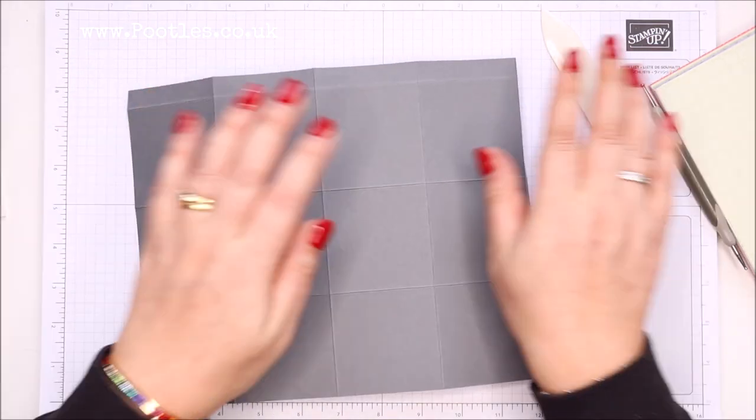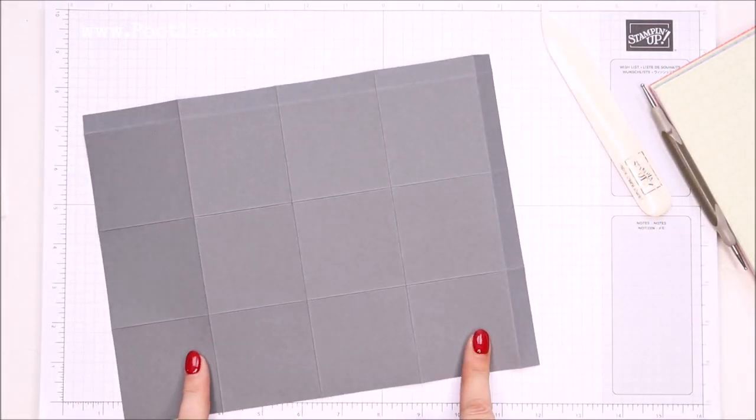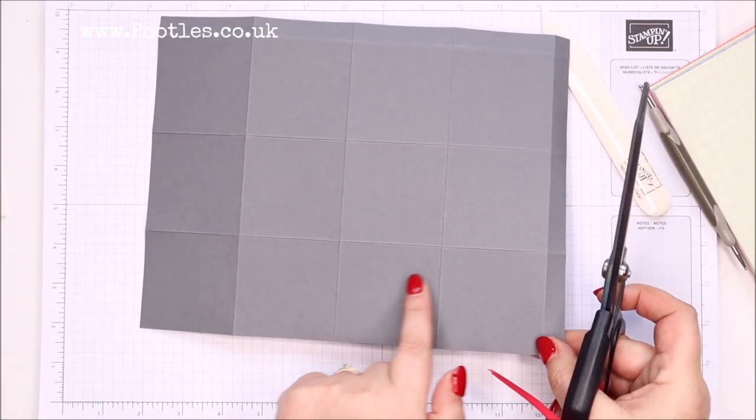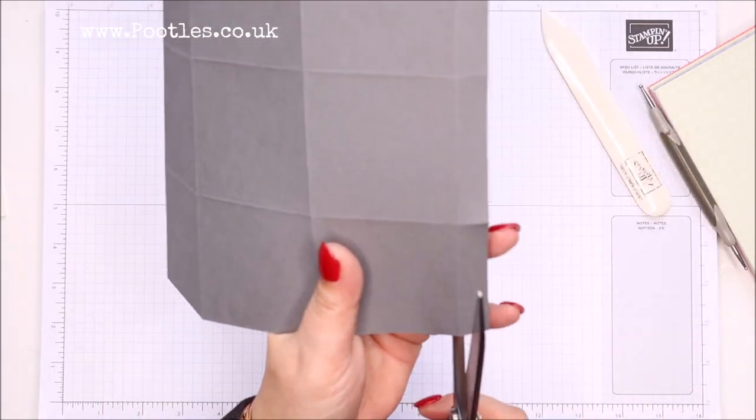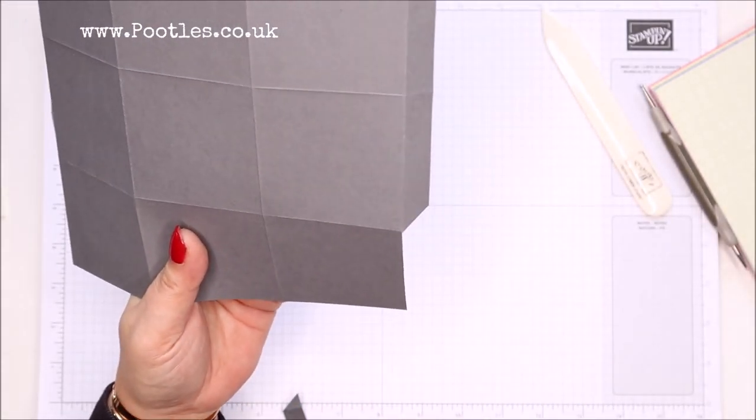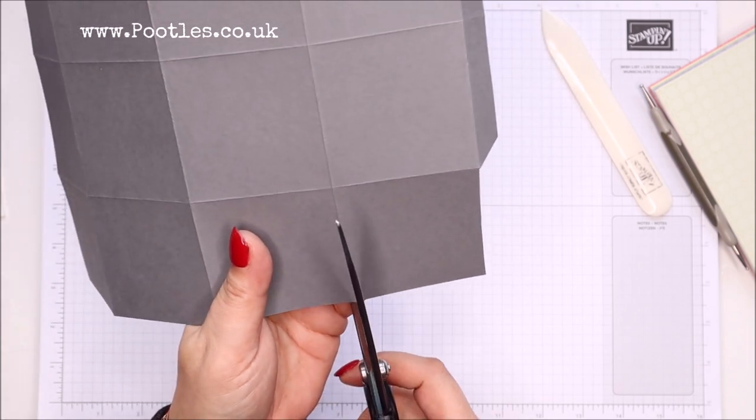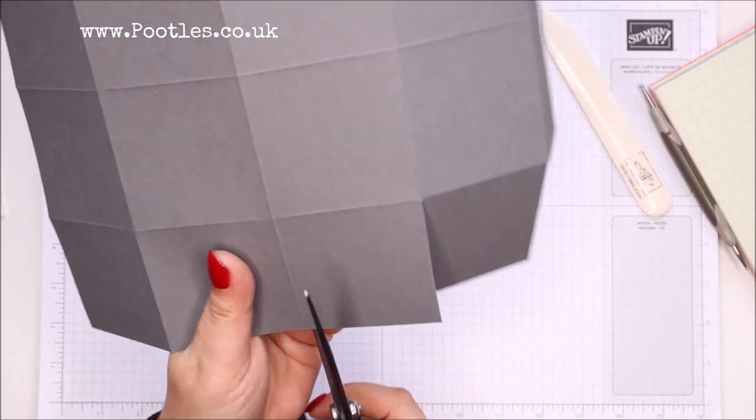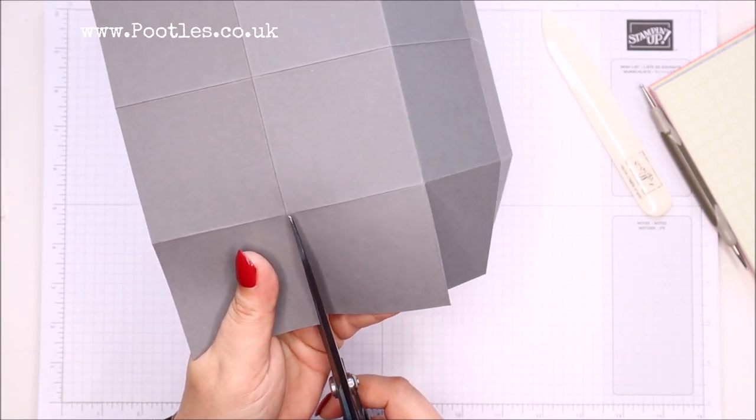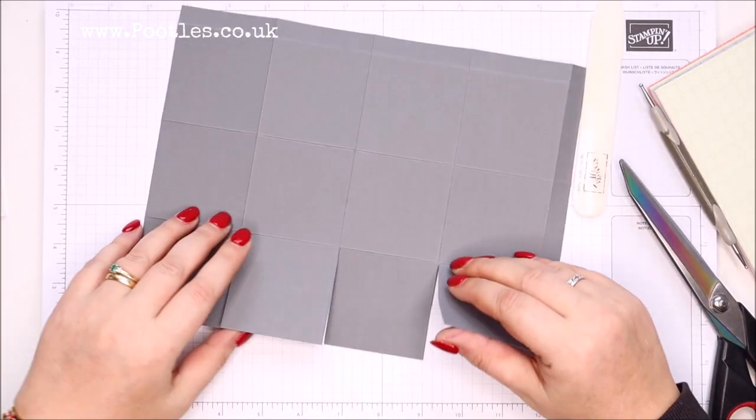Let's start at the bottom first because that's going to be the easiest. You've got four squares and a little rectangle. First things first, get rid of the rectangle. Cut straight down these, so it's separated like that.